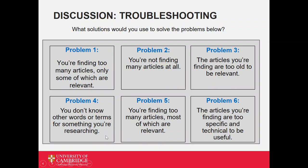For problem four, search Google for key terms in your discipline and look for alternatives that way. For problem five, with too many articles most of which are relevant, I'd look to see if I could find a key article — the one that everybody's citing — and go from there, and possibly narrow your research question down. For problem six, when the information is too specific, maybe look for an introductory textbook or a popular article on the subject, which might make it easier to understand.